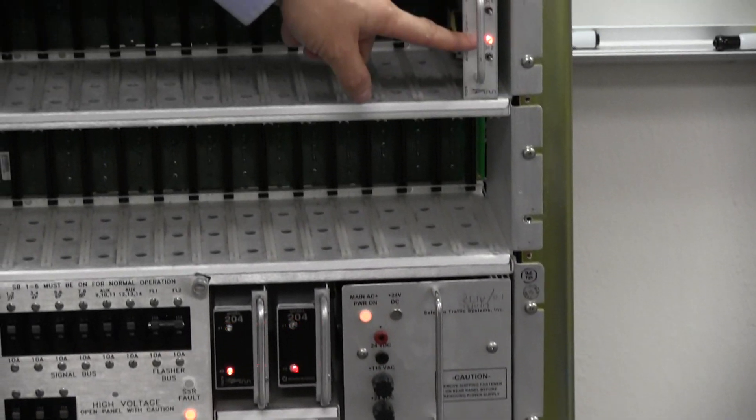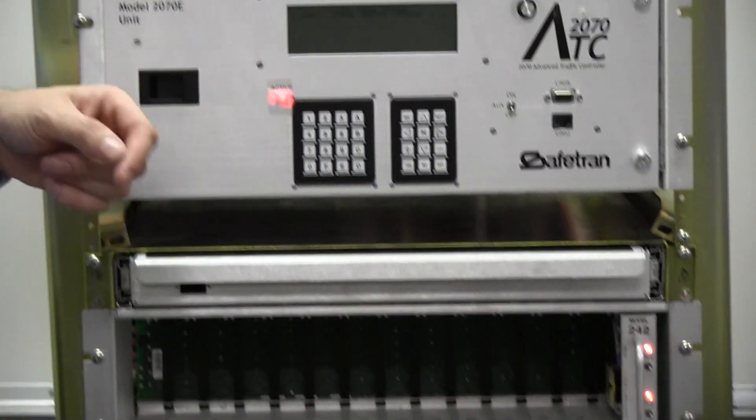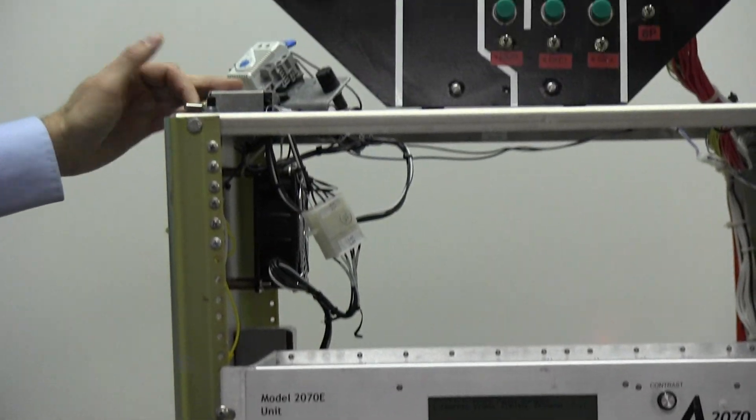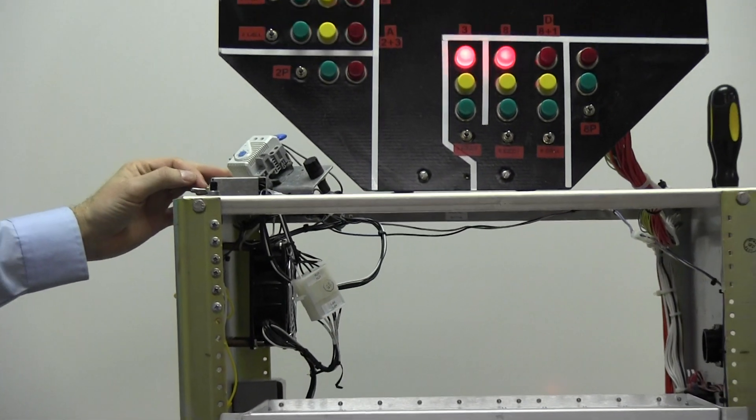The only other thing that can put this stop time light on at the i14 would be the police panel. If we examine our police panel, we can see that it is in the flash condition.